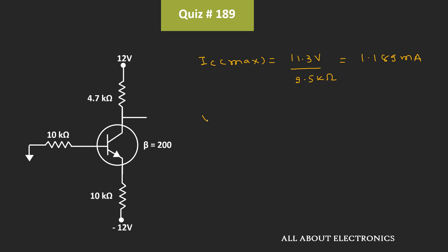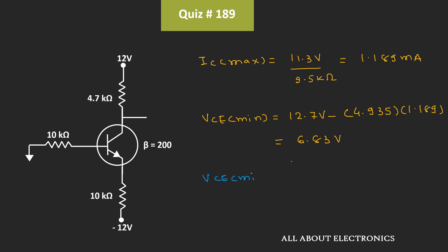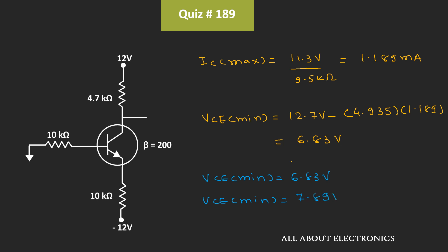The minimum value of the collector-to-emitter voltage equals 12.7V minus 4.935 kΩ times 1.189 mA, which equals 6.83V. So the minimum value of Vce is 6.83V, while the maximum value is 7.89V. This is the correct answer for the given question.